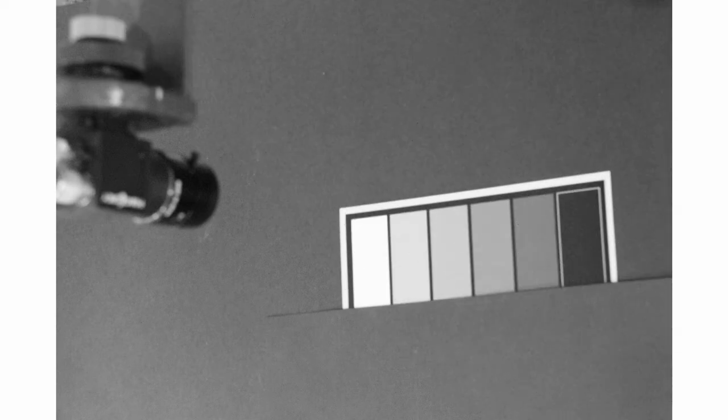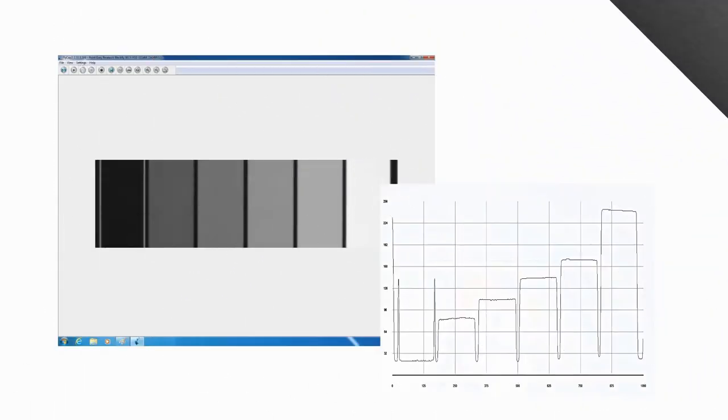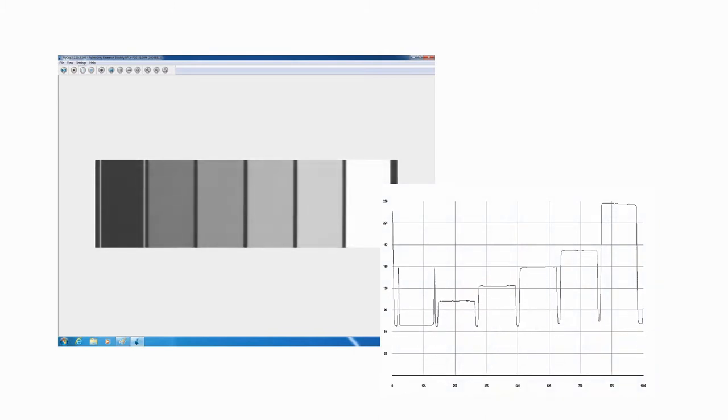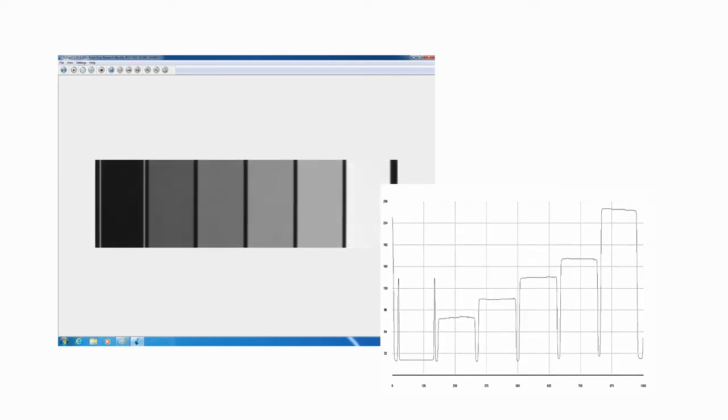This is our demonstration setup again. Here's the image of the grayscale test card. You can also see the grayscale histogram. Notice that there are peaks corresponding to each gray level in the target. By changing the black level, we shift the peaks up or down in gray level, but do not change the spacing of the peaks.